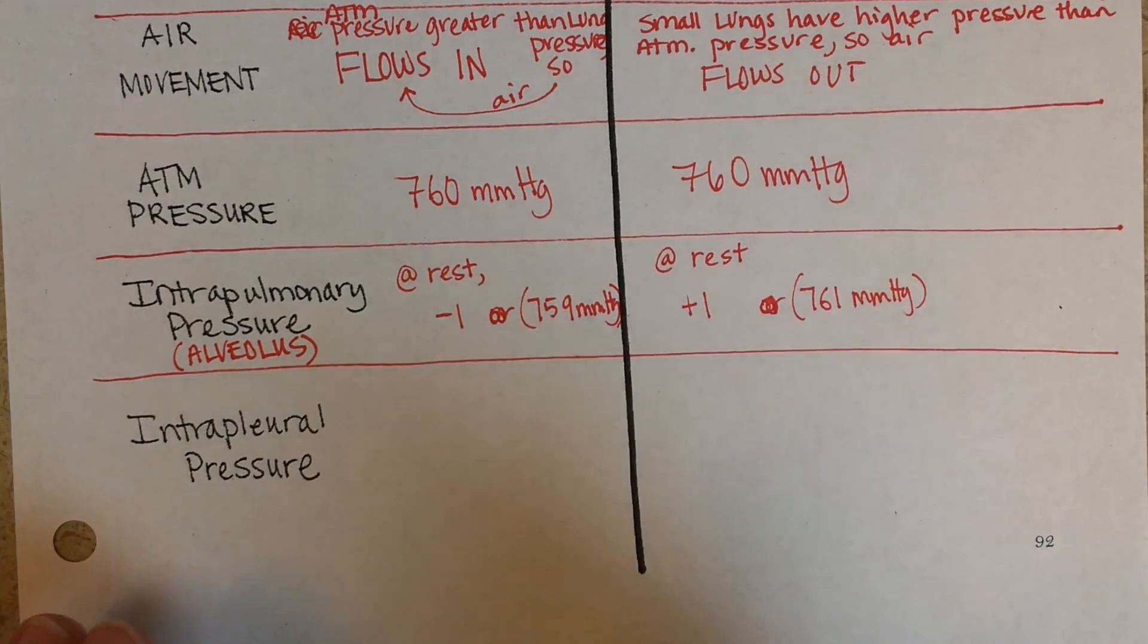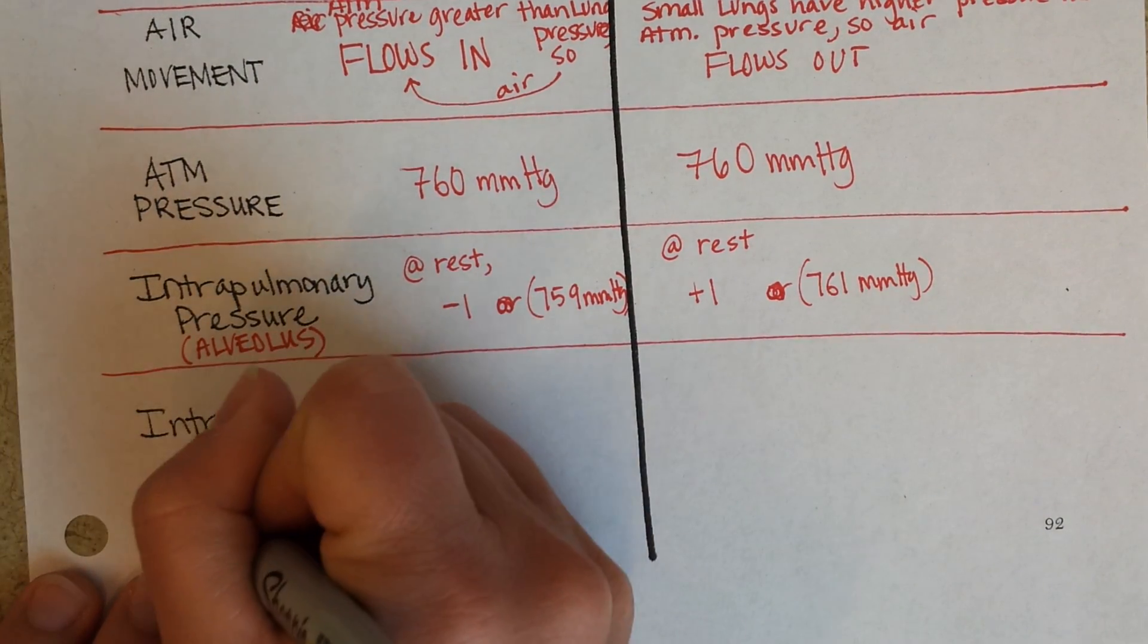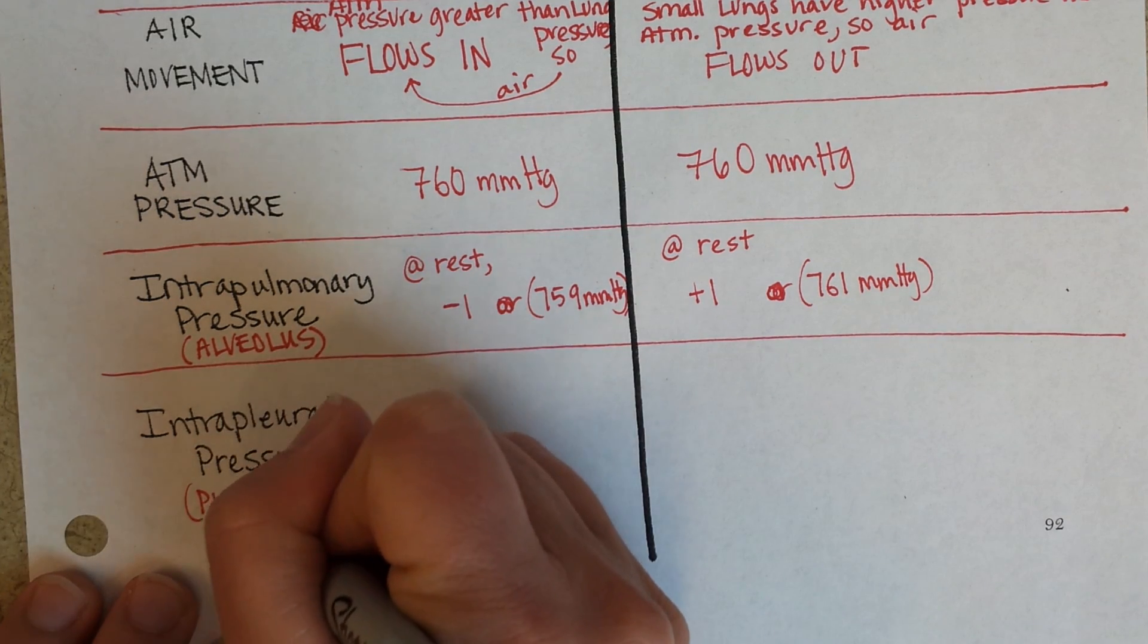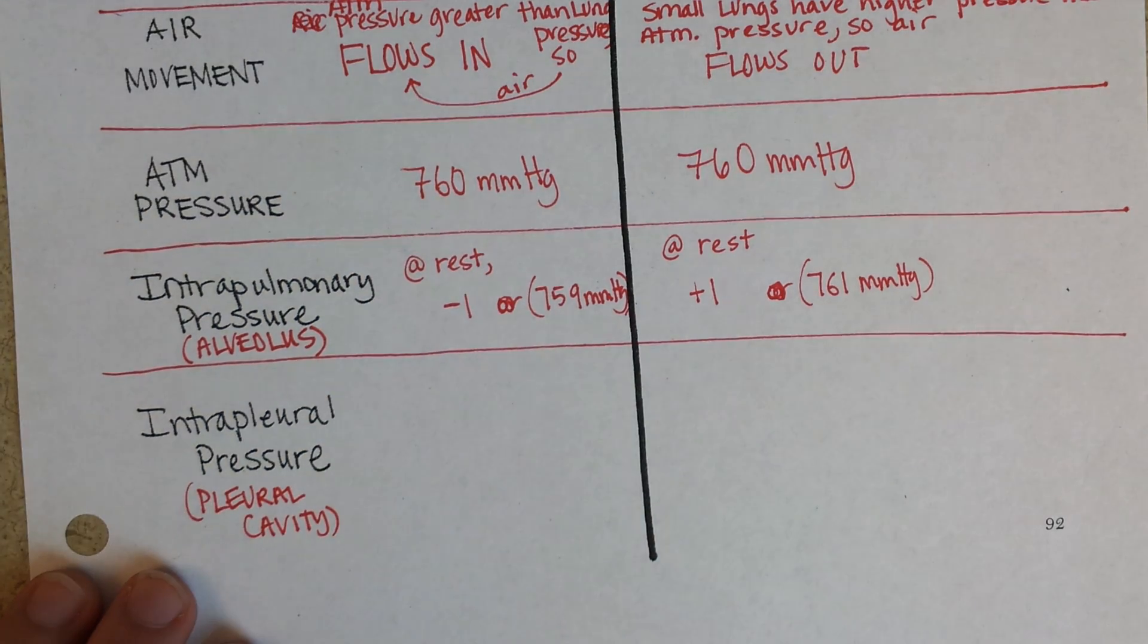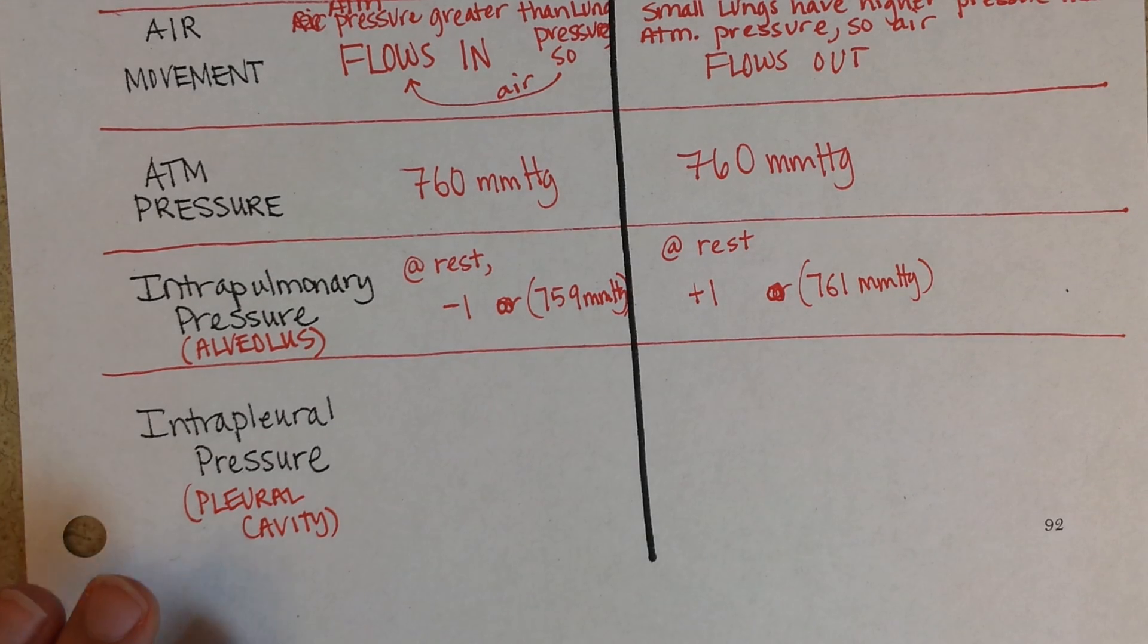Now I'm going to give you another pressure. This is the pressure in the pleural cavity. This is the pressure that's between the parietal pleura and the visceral pleura. Remember, there's a little bit of fluid in there. And when you're at rest, there's always less pressure in that fluid than there is at atmosphere. And that helps to keep the lungs always inflated.